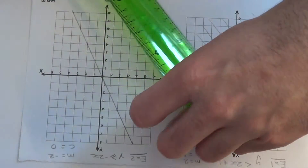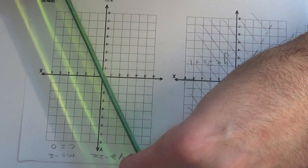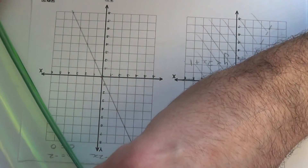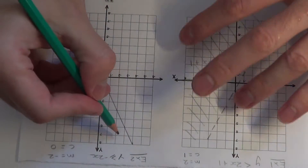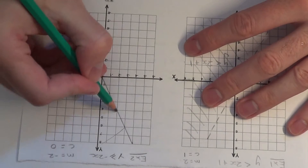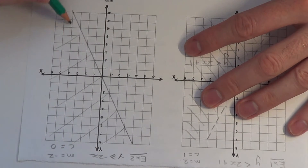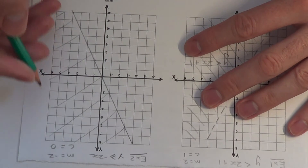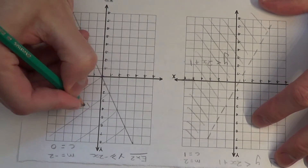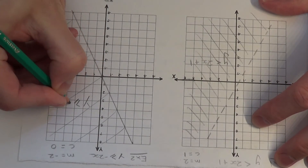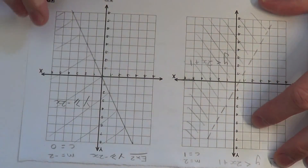So if we put our ruler on the line, the bit above the line will be this part of the coordinate grid — this is above the line. And we just mark the region as y is more than or equal to minus 2x.